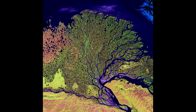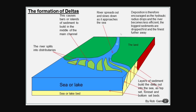River deltas are very interesting. Basically a river will get sediment from upstream and that sediment will keep flowing until it reaches a non-flowing area where it will be deposited. This deposition actually causes the river to split when it meets the non-flowing body of water.